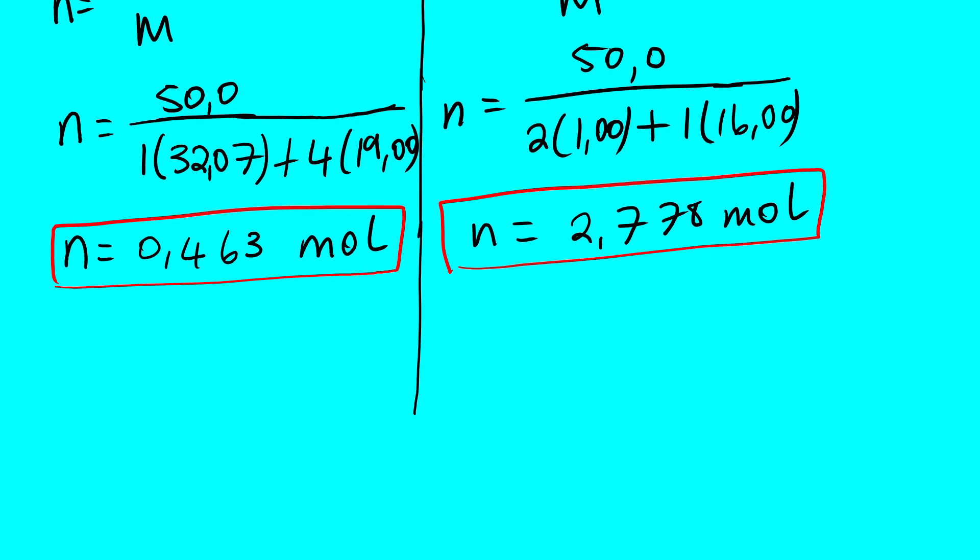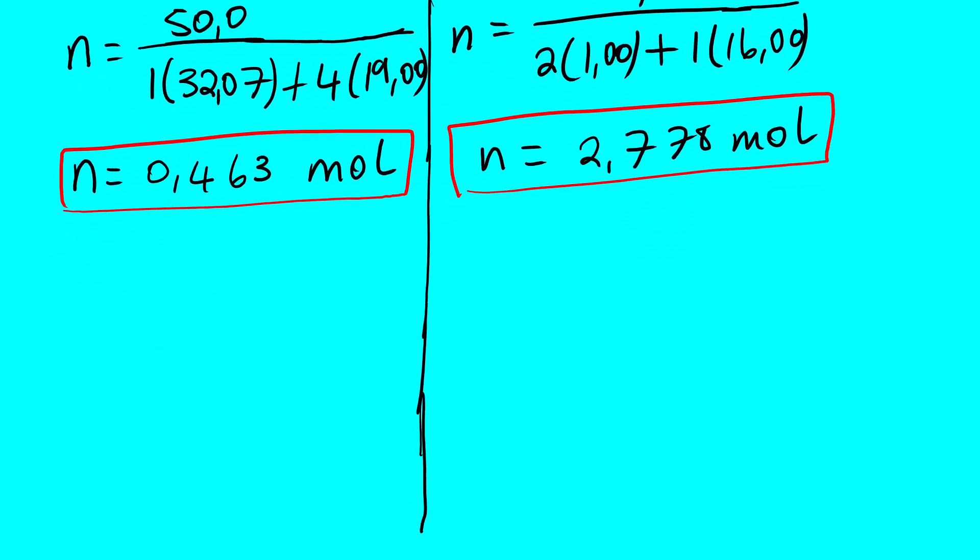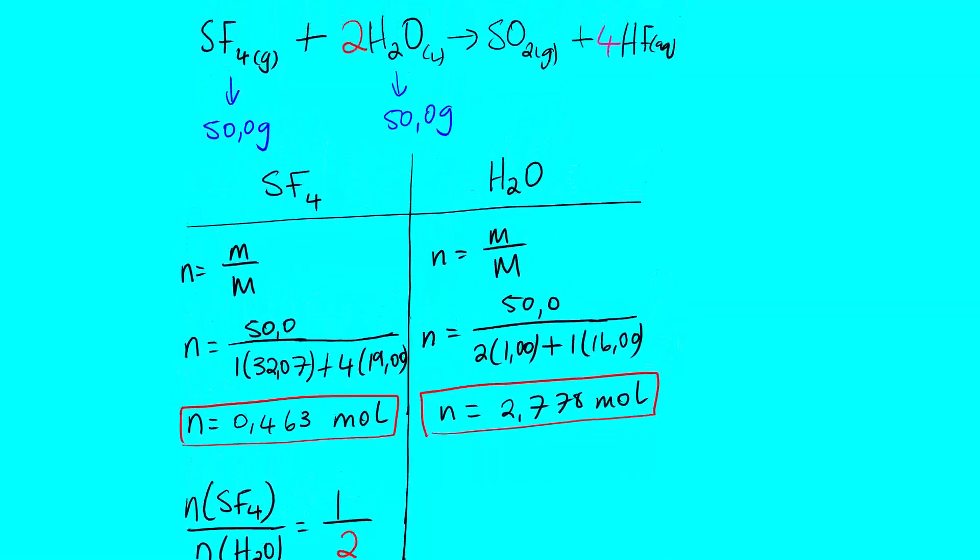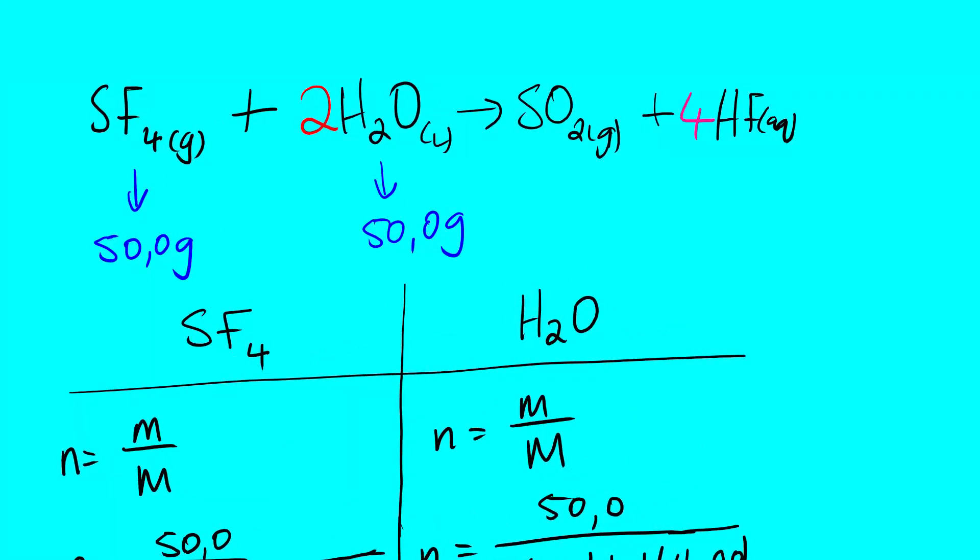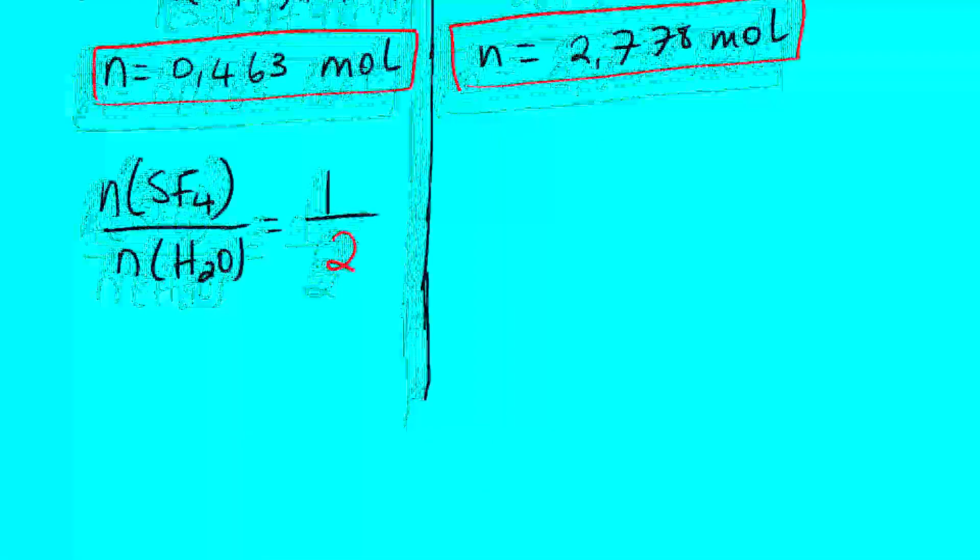Now we need to continue. It's either we can use sulfur tetrafluoride or we can use water to determine the limiting reagent. It's not important to calculate both of them because we are not talking about excess reactant in this case. We are only looking for the limiting reagent. So let us use sulfur tetrafluoride. So the molar ratio between sulfur tetrafluoride and water is 1 over 2. Where did we get this 1 and 2? The coefficient of this is 1, the coefficient of this one is 2, from here.